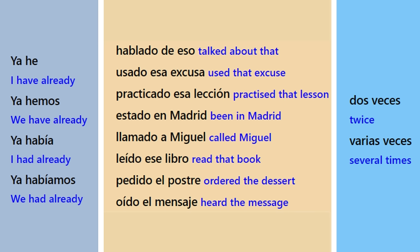How about 'I've already ordered the dessert twice'? YA HE PEDIDO EL POSTRE DOS VECES. And 'I've already been to Paris'? YA HE ESTADO EN PARIS.